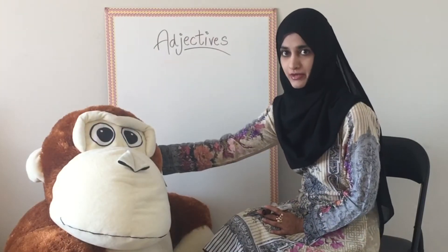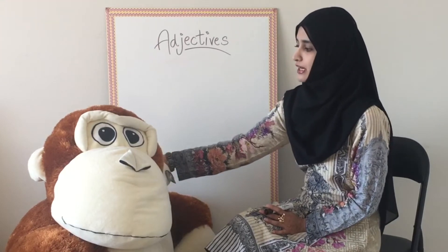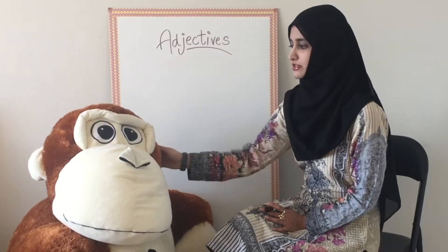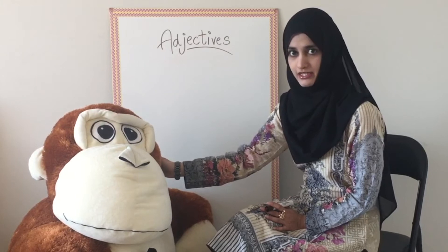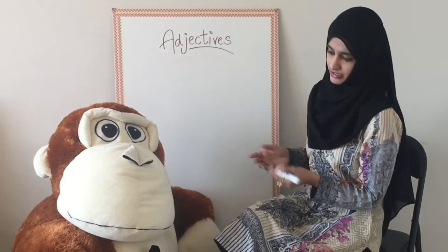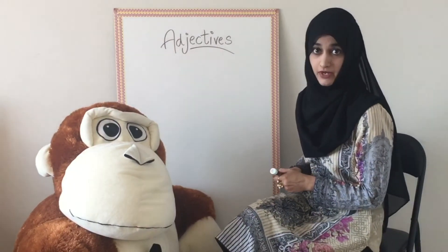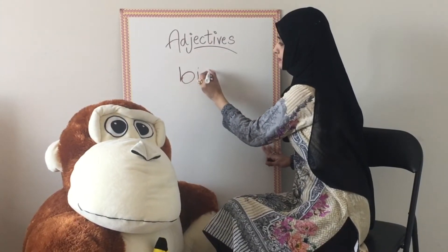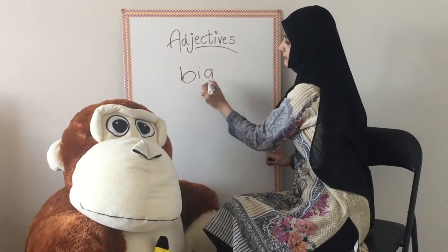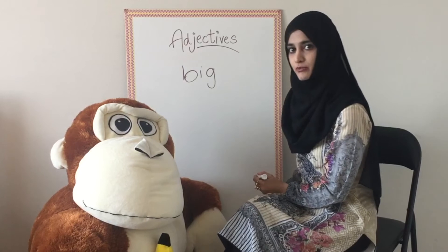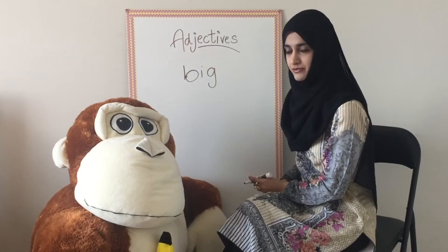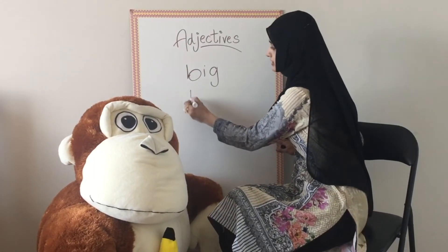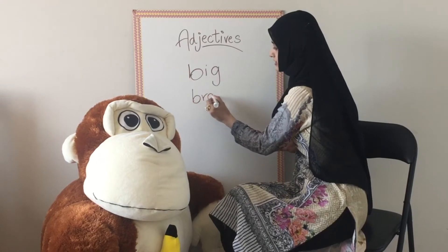Here we have a monkey and we are going to list down all the words we can use to describe the monkey. So the first word that comes to my mind is big. Let's talk about the color — it's brown. So brown is another word that is an adjective.